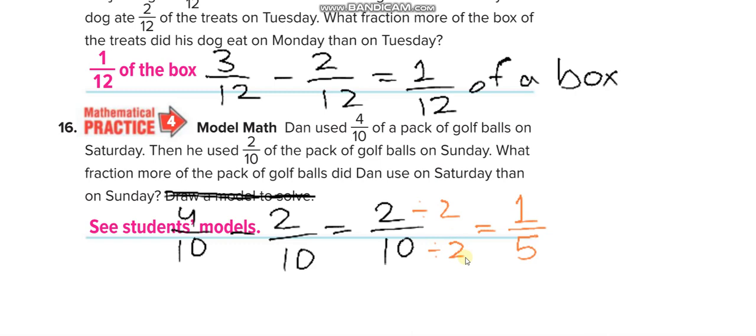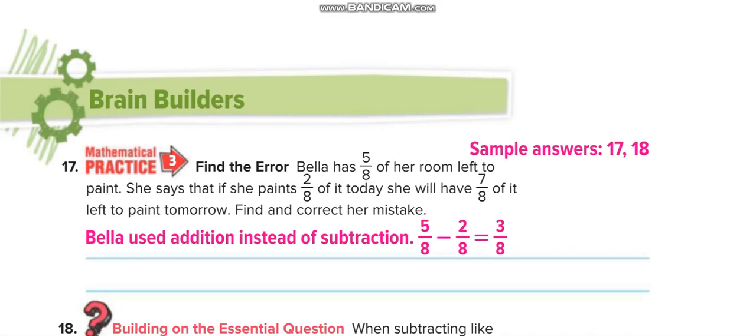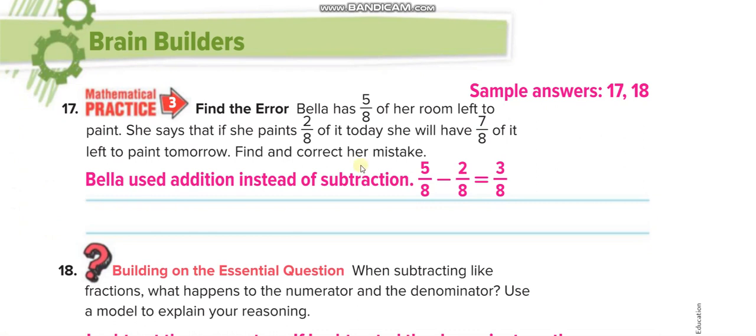Divide by 2 up and divide by 2 down, 1 over 5. Here 5 over 8 minus 2 over 8 is 3 over 8, not 7 over 8.